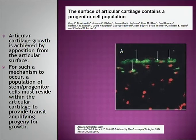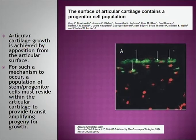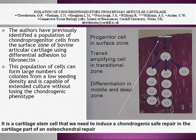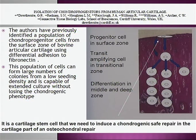Articular cartilage growth is achieved by apposition from the articular surface. For such a mechanism to occur, a population of stem cells must reside within articular cartilage. Dowthwaite and co-workers found that there are indeed progenitor cells in the superficial zone. So in cartilage itself, we also have what we are looking for — stem cells.